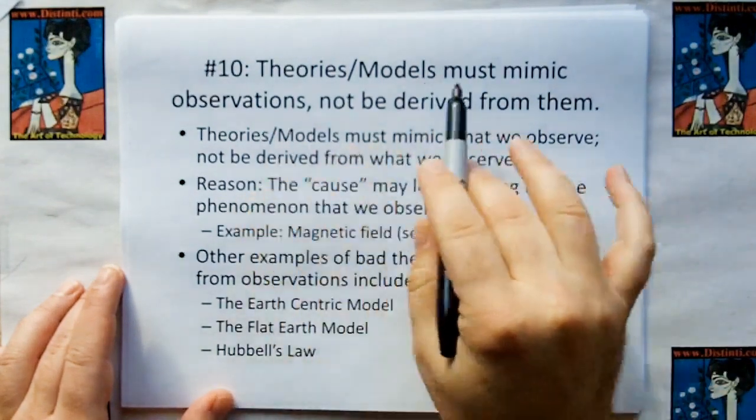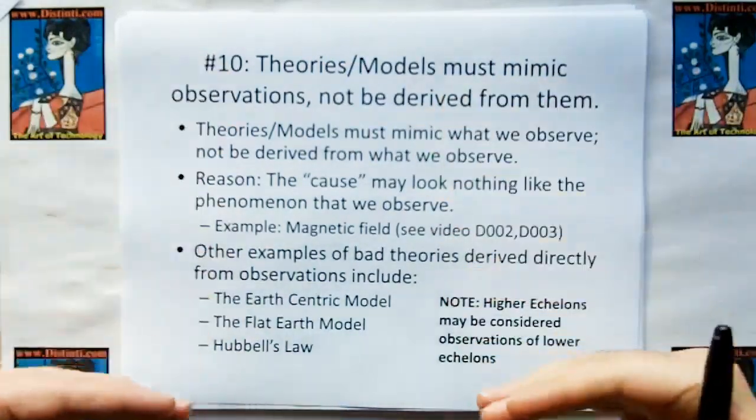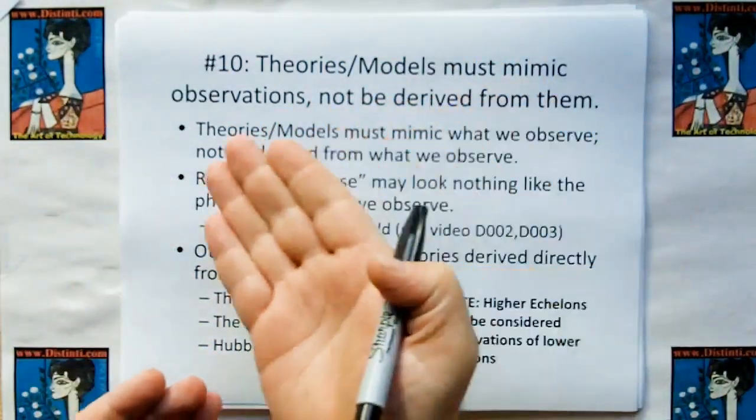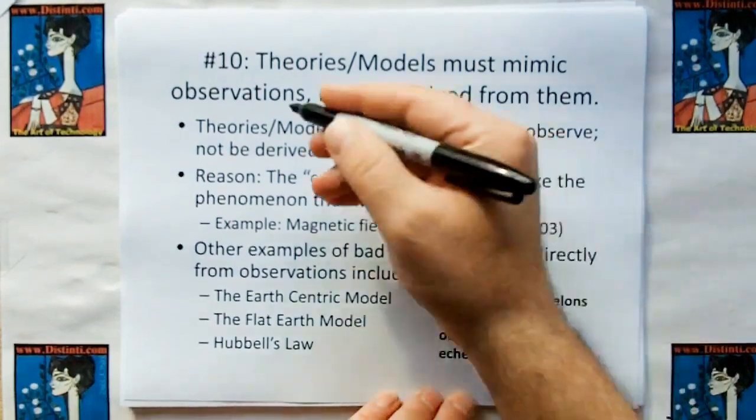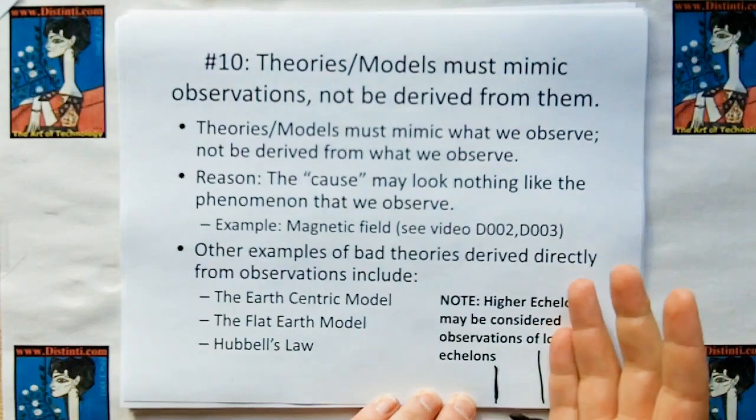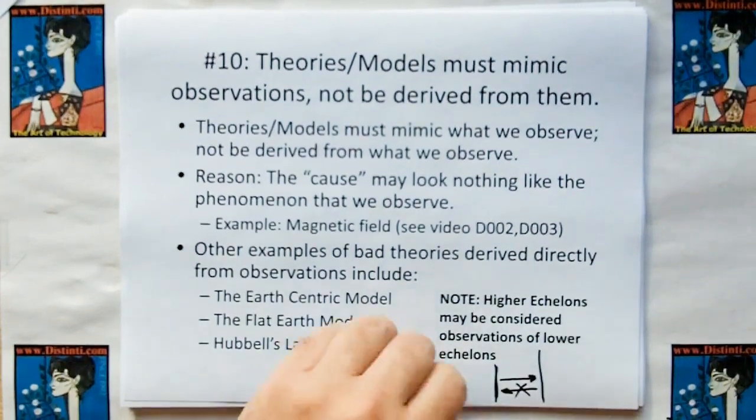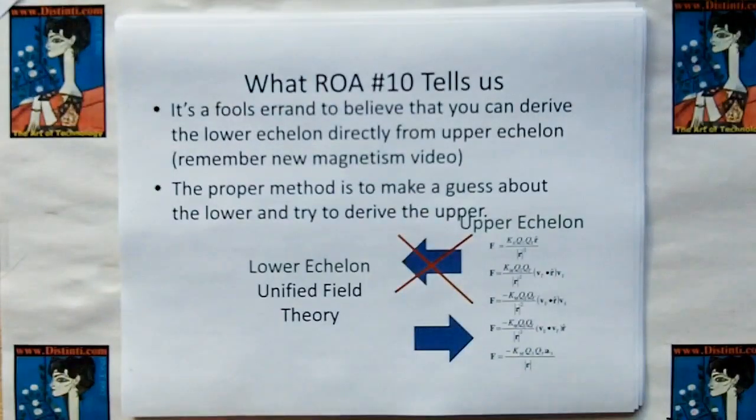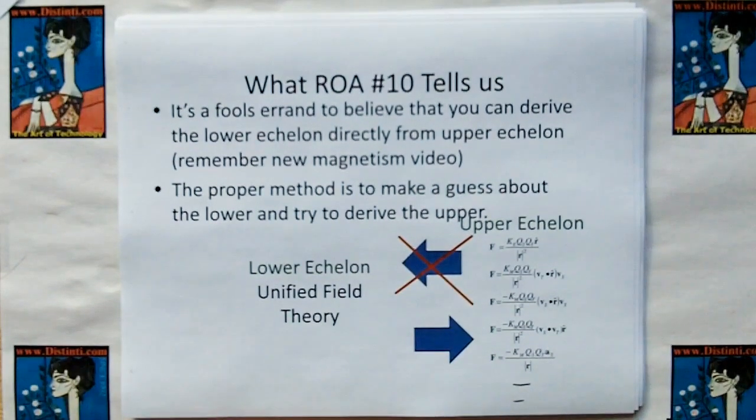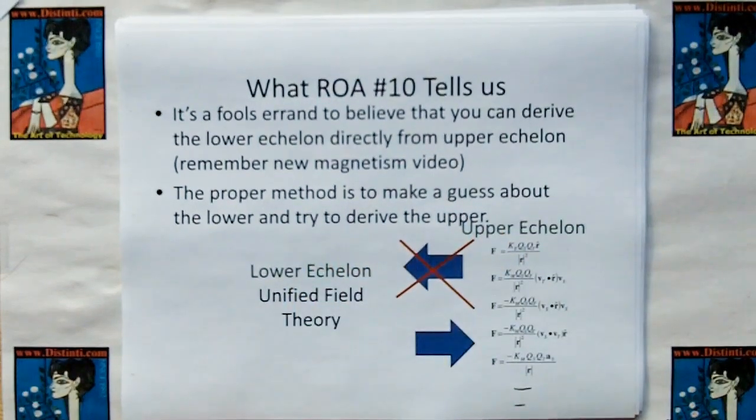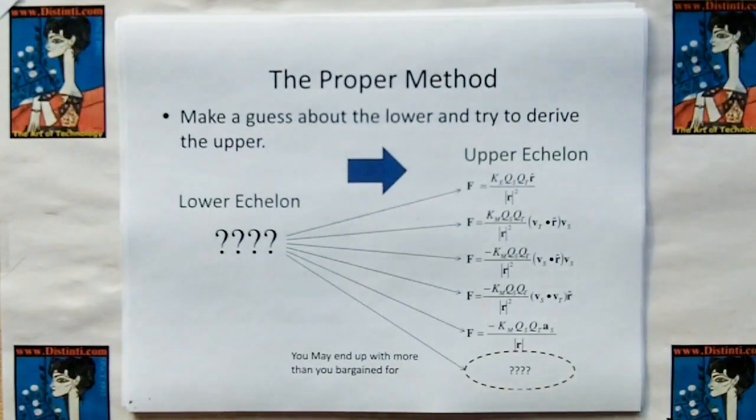Okay, then we have to review rule of acquisition number 10, and the name changed. I'm trying to revise the rules of acquisition to make the names more like the Ferengi rules, where the one line explained everything in the slide. And basically the way this goes is theories and models must mimic observations and not be derived from them. In other words, your theories and models would be the underlying echelon, and the observations would be the upper echelon. So you can always treat the upper echelon as observations of a lower echelon, and therefore you have to derive in this direction, not this direction.